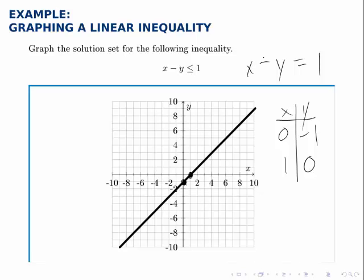Now we need to shade one side of this line or the other. To figure out which side of the line to shade, all we have to do is pick a test point somewhere on one side of the line. So I could pick a point out here for instance.